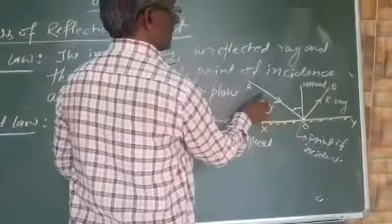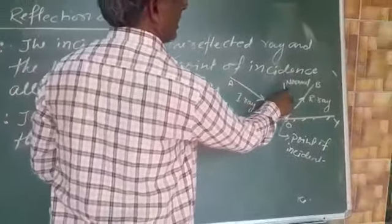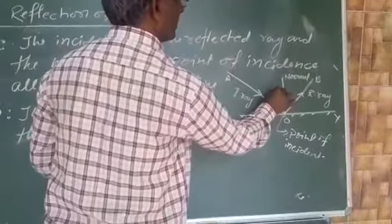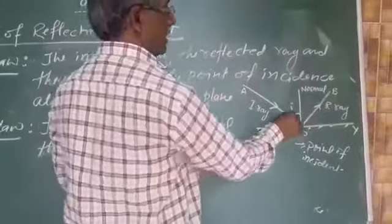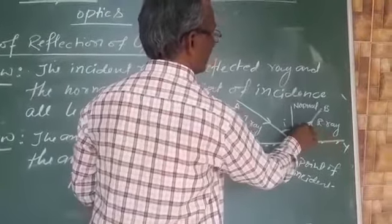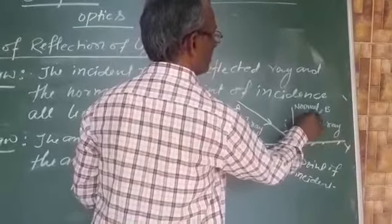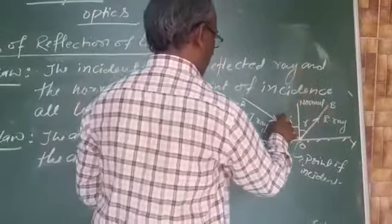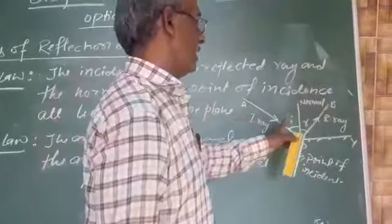This means the angle between incident ray and the normal, that is angle of incidence, and the angle between reflected ray and normal, that is angle of reflection. And in this law both angles are equal.